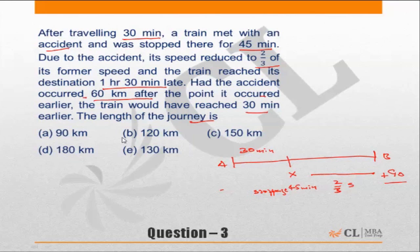Had the accident occurred 60 kilometers after the original point — let's say the accident had occurred not at X but at Y, with the distance between X and Y being 60 kilometers — the train would have reached 30 minutes earlier. That means it would have been late by only 60 minutes instead of 90. This is the data given to us. Now let us consider what additional things we need to be clear about.